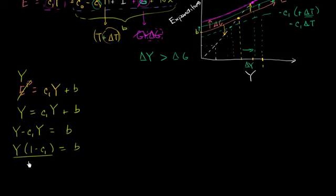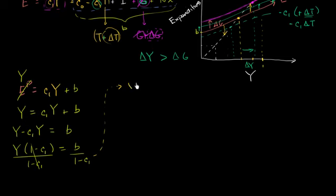Dividing both sides by (1 minus C1), we get our equilibrium aggregate income — aggregate output, aggregate GDP — is equal to 1 over (1 minus C1), times B. Remember, B was all the autonomous spending terms we grouped together.